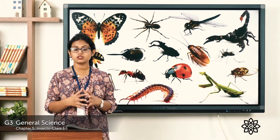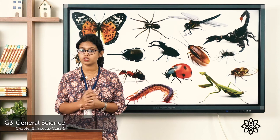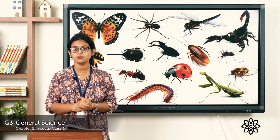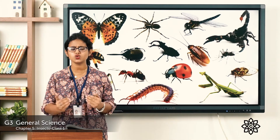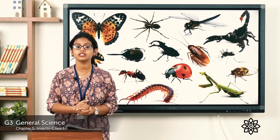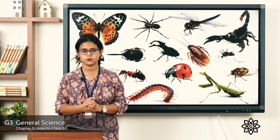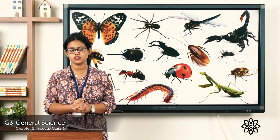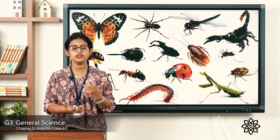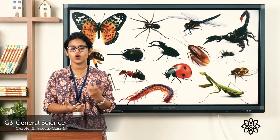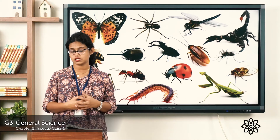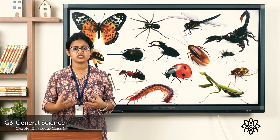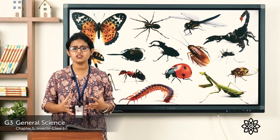There is an interesting fact about these insects. These insects are the largest group of animals living on the earth. They live everywhere — on plants, in soil, on the ground. These insects differ in shape, size, color, etc.